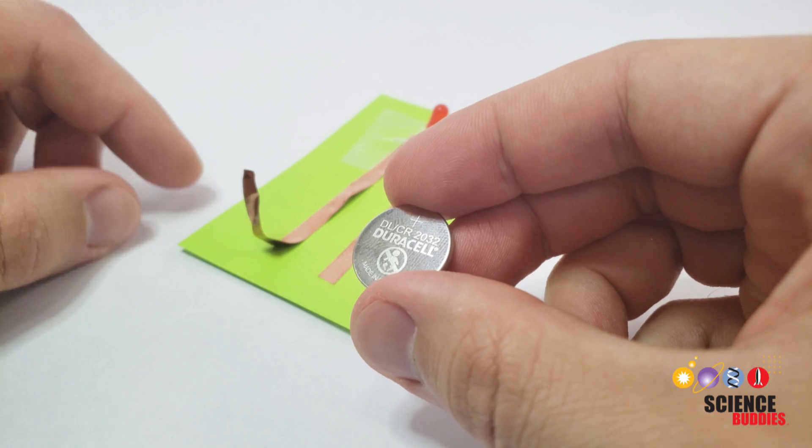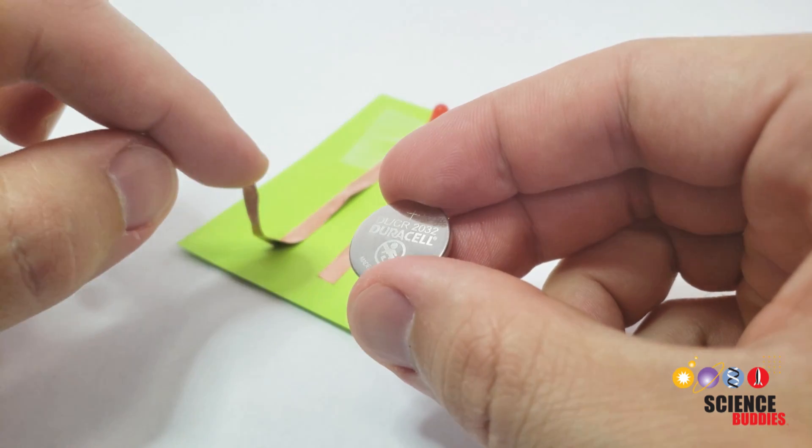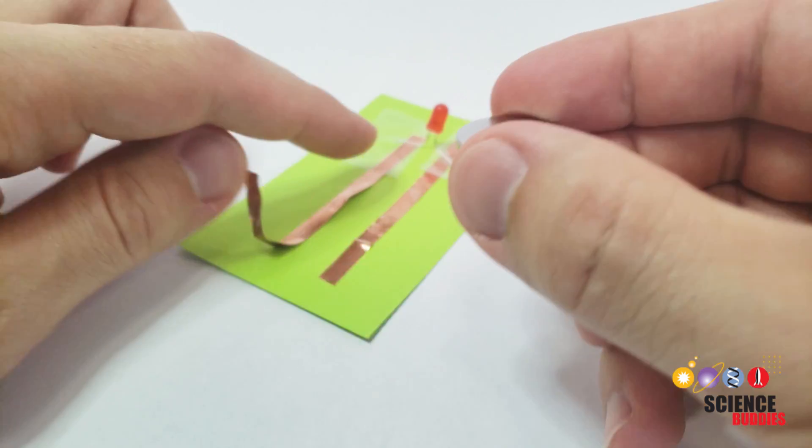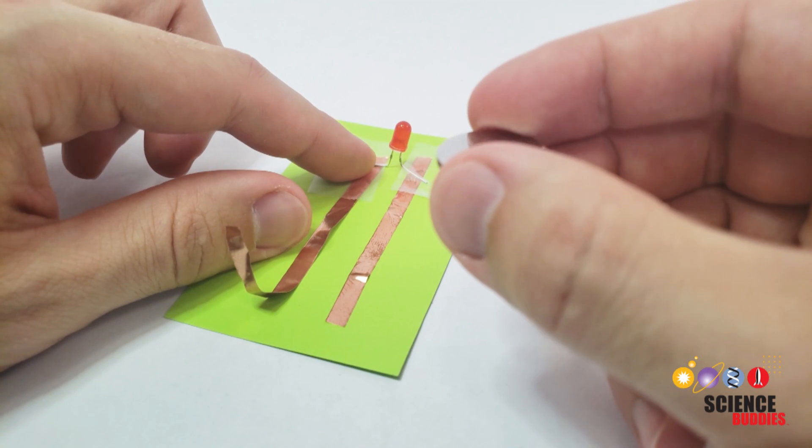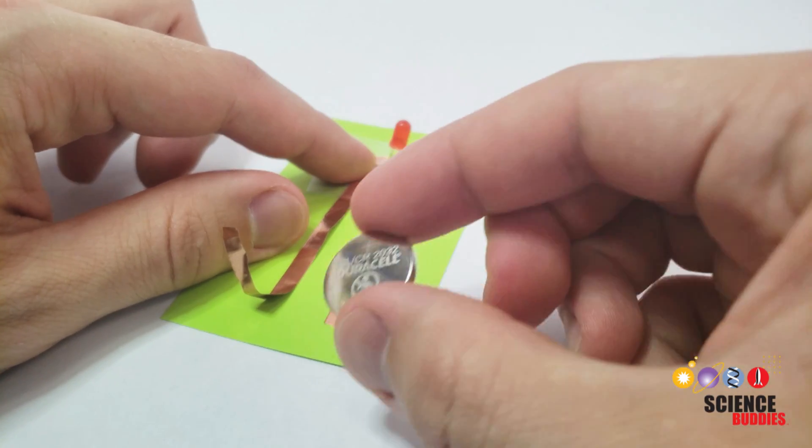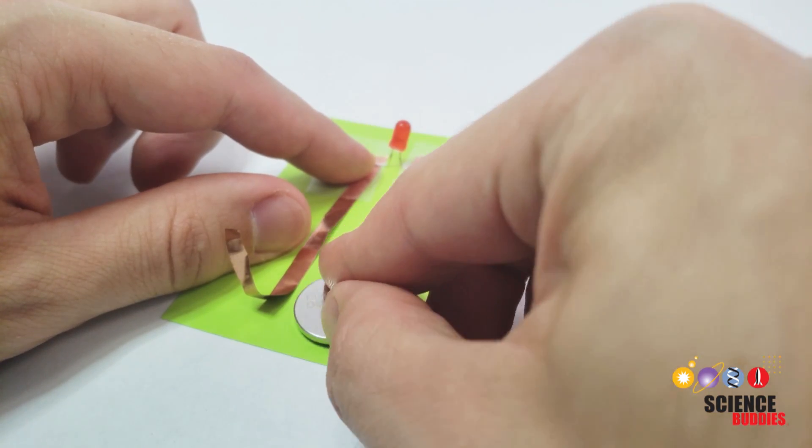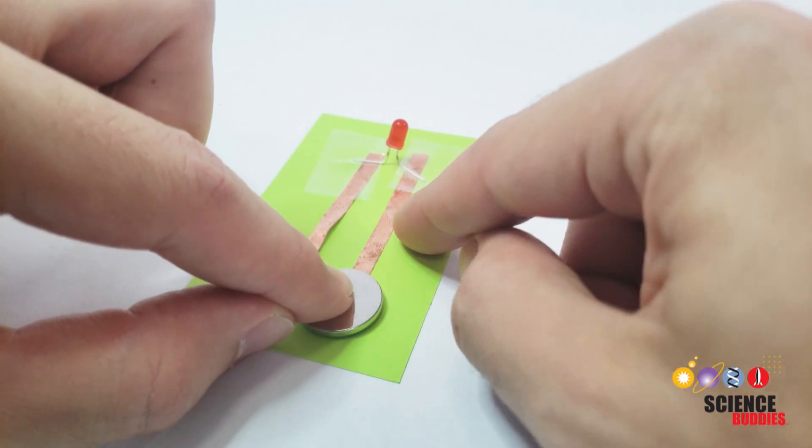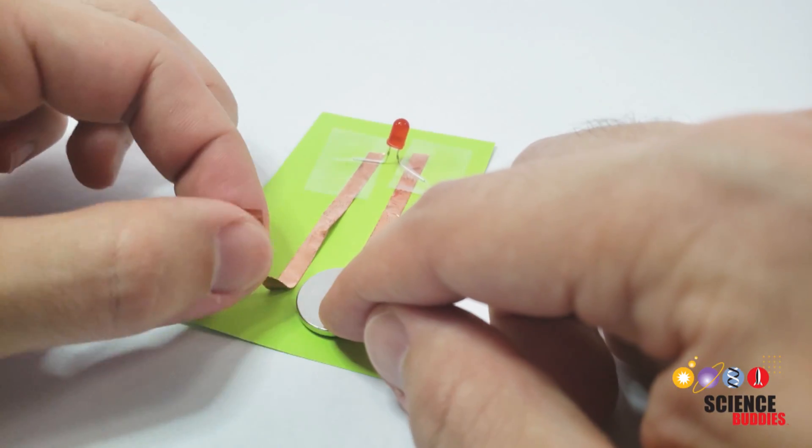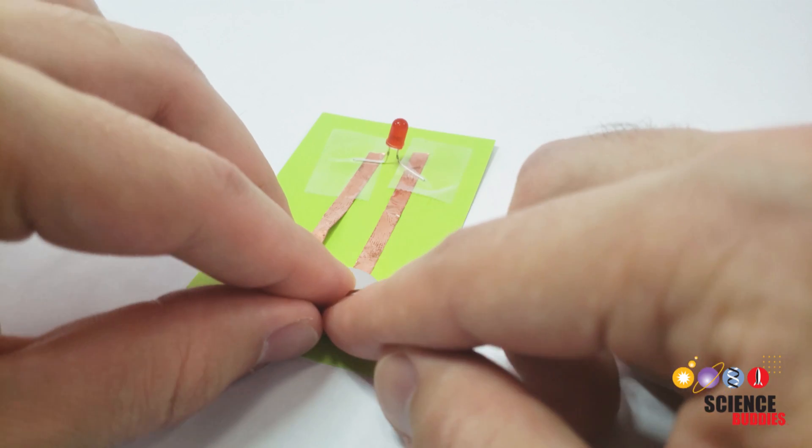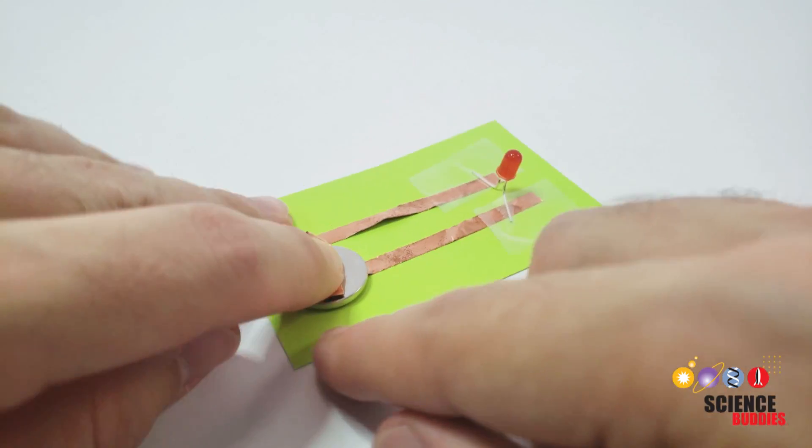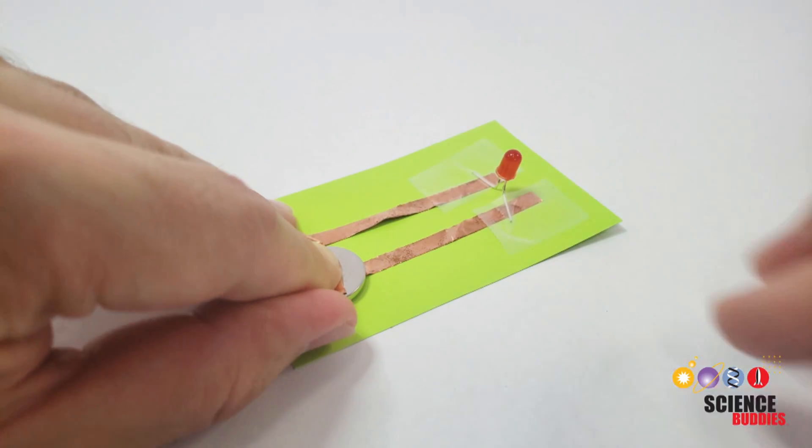So when you connect your battery to your circuit, make sure the positive side is connected to the copper tape trace that's connected to the longer leg of the LED. In this case, that's on my left. I'm going to put the battery down so the bottom connects the copper tape trace on the right, and I'm going to fold this trace over to touch the top. Now, when I press that down, my LED should light up.